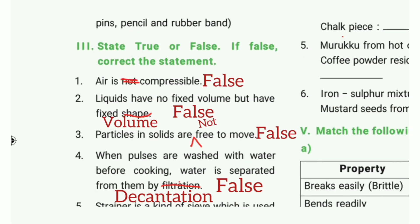True or false — if false, correct the statement. First one: air is not compressible. The answer is false. The correct statement is: air is compressible. Second one: liquids have no fixed volume but have a fixed shape. The answer is false. Correct statement: liquid has fixed volume. Third one: particles in solids are free to move. The answer is false. Correct statement: particles in solids are not free to move.